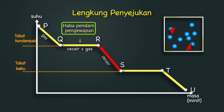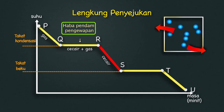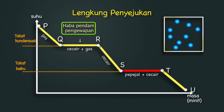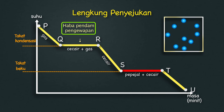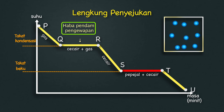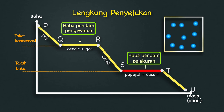RS — Haba dibebaskan menyebabkan tenaga kinetik berkurang, maka suhu menurun. ST — Haba dibebaskan untuk membentuk ikatan antara molekul yang lebih kuat. Tenaga kinetik tidak berkurang, maka suhu tidak berubah. Fasa pepejal cecair dikenali sebagai haba pendam pelakuran.